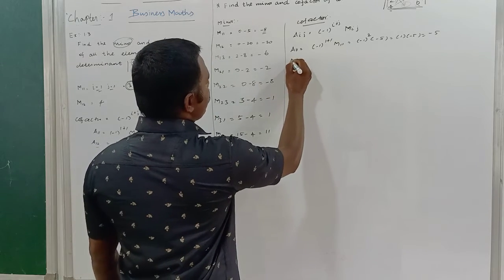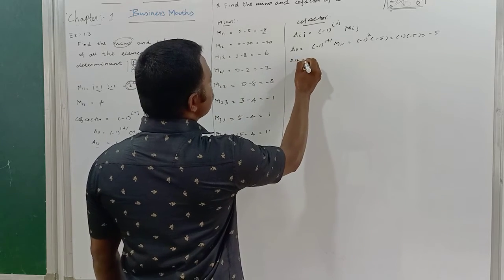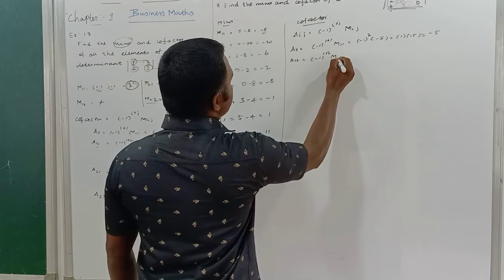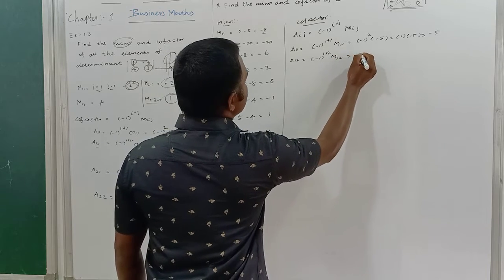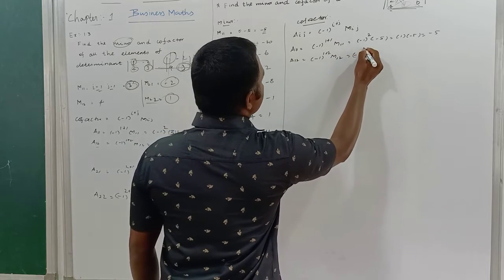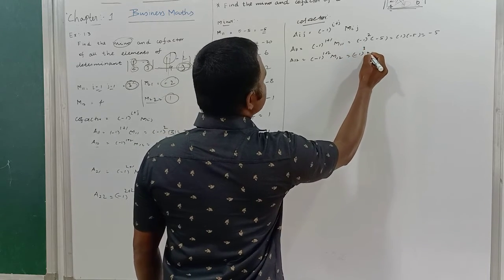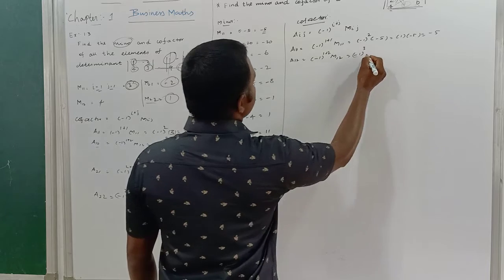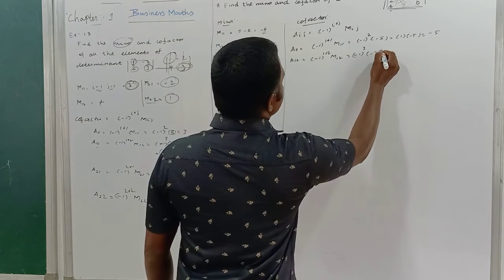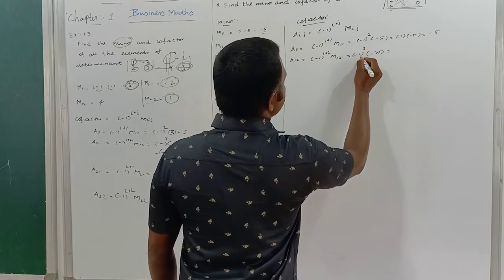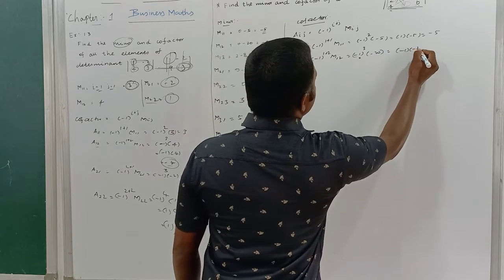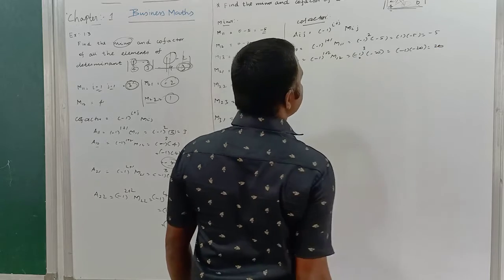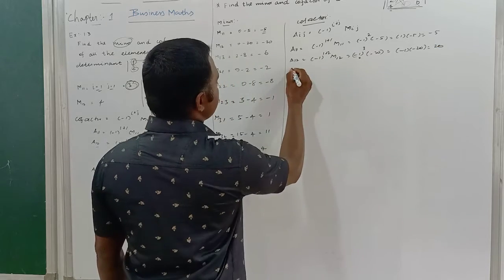Cofactor A12 = (-1)^(1+2) × M12 = (-1)^3 × (minus 20) = minus 1 × minus 20 = plus 20.